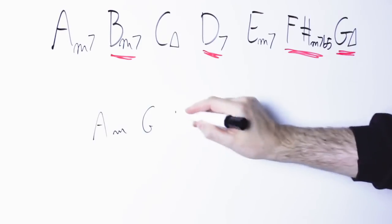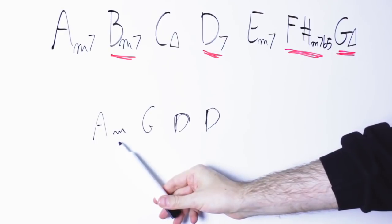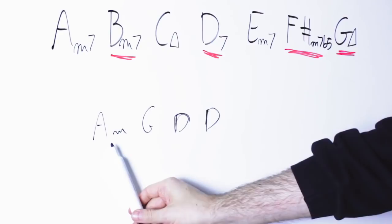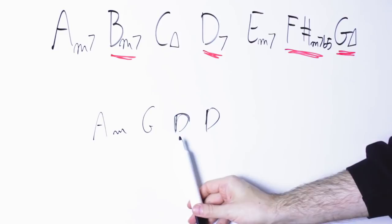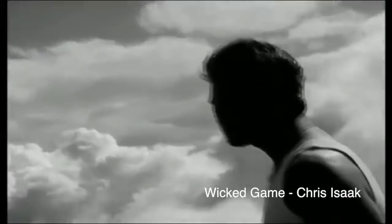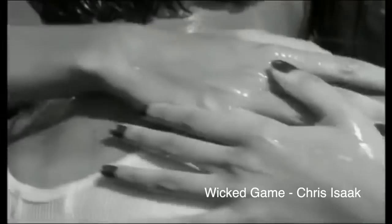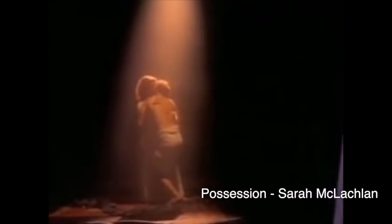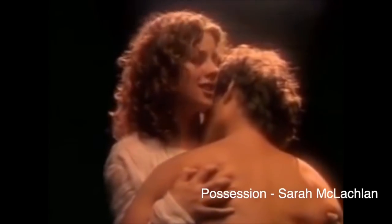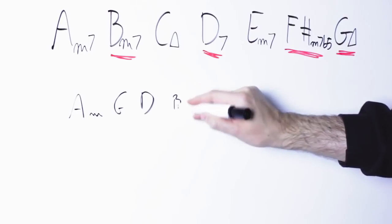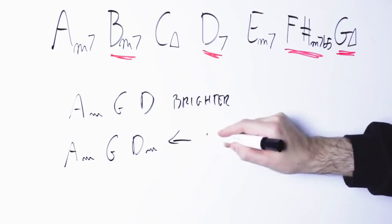So for instance I could have a chord progression that sounds this way: A minor G D. Here are two examples: 'I don't want to fall in love' and 'Listen as the wind blows from across the great divide, voices trapped in yearning.'